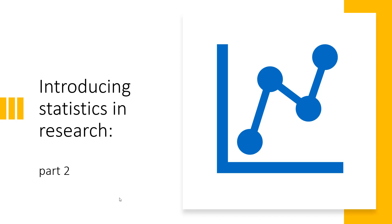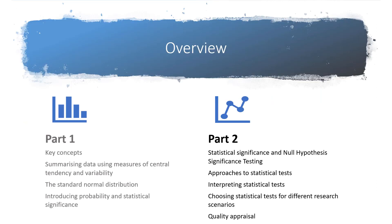Hello everyone and welcome to Introducing Statistics in Research Part 2. In Part 1 we looked at some of the key concepts such as populations and samples and how we can use mainly descriptive statistics to help us summarise data using measures of central tendency and variability. We also introduced the idea of the standard normal distribution, probability and statistical significance.